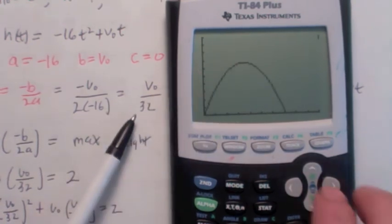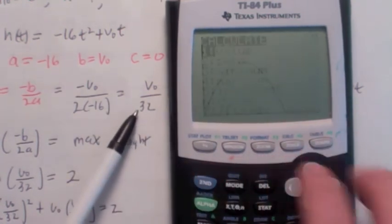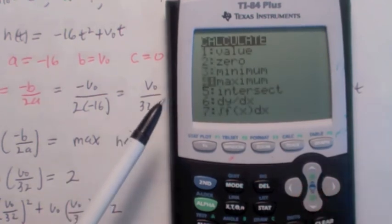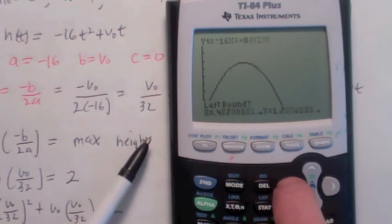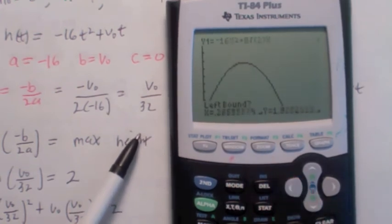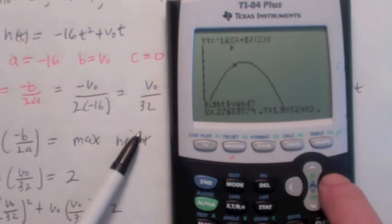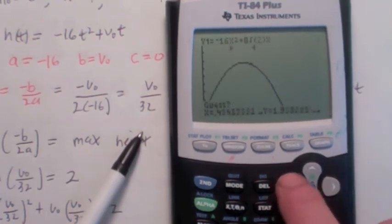So the graph looks kind of like this. Let's find that vertex. Remember how to do that? Second calc. Go down to maximum. Hit enter. Hit enter. And then we have to get to the left of it. Hit enter. Get to the right of it with the arrow key. Hit enter. Now get to the middle and hit enter.